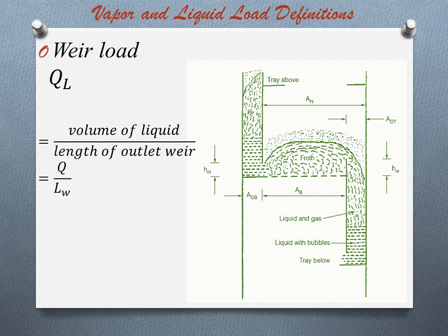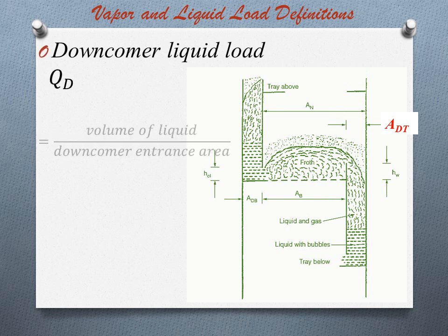And last is downcomer liquid load. For downcomer design, the liquid load is usually defined as the liquid velocity at the downcomer entrance. It is defined by the equation QD equals the ratio of volume of liquid to downcomer entrance area, represented as QD equals Q divided by ADT.